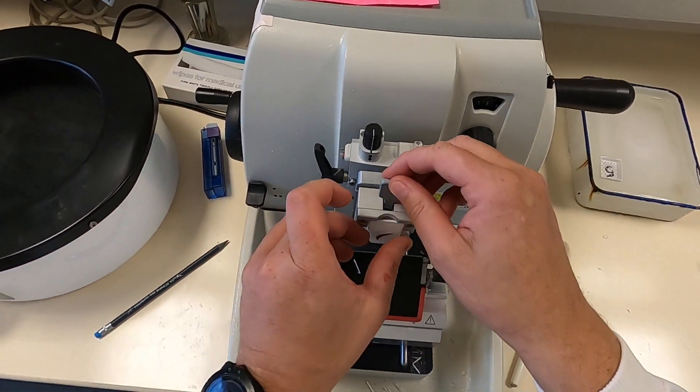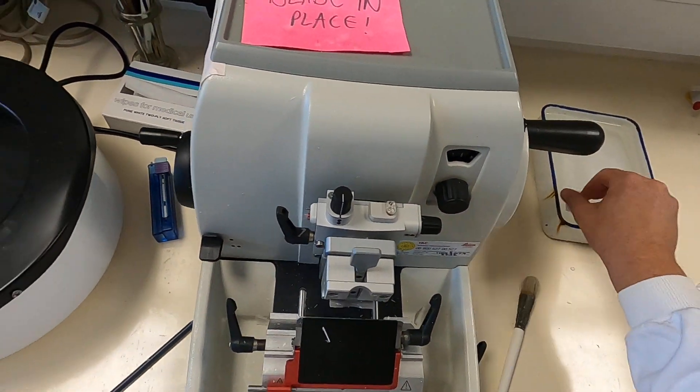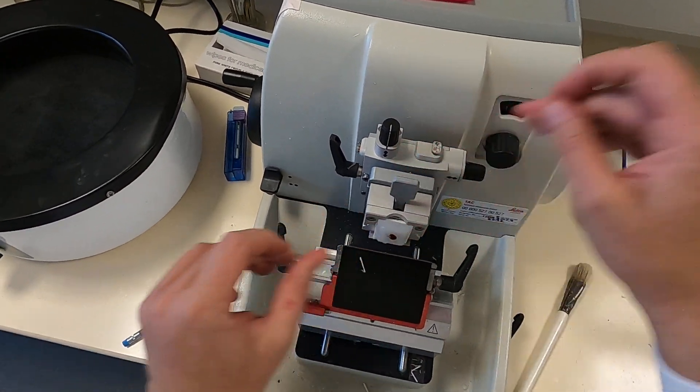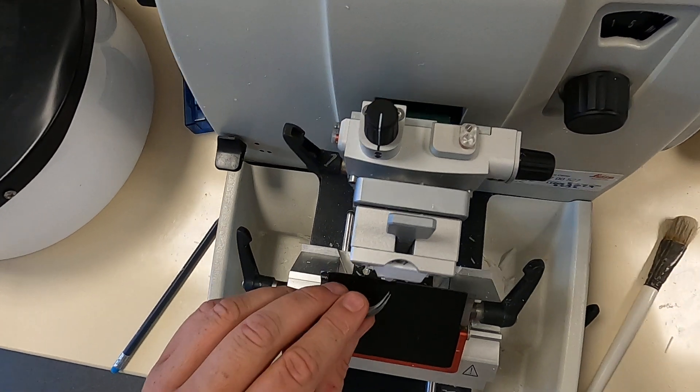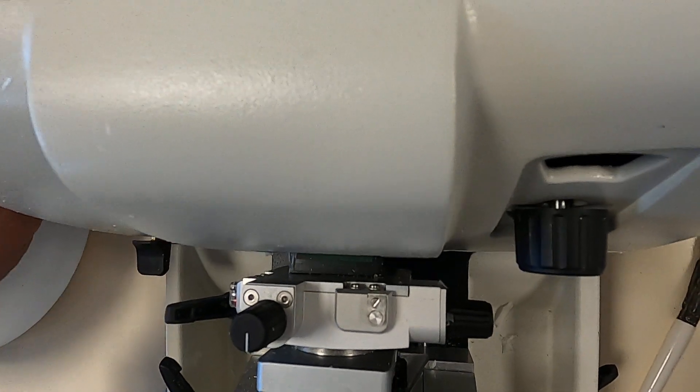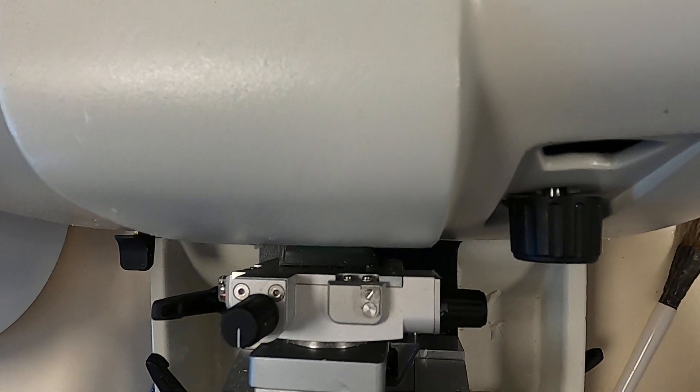That is how simple it is to cut a nice block. I'll just show you again. Hopefully this one here will work. It's a bit rubbish processing, this one. So, in goes the block. I align my block with the blade.